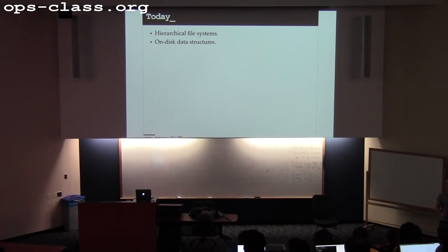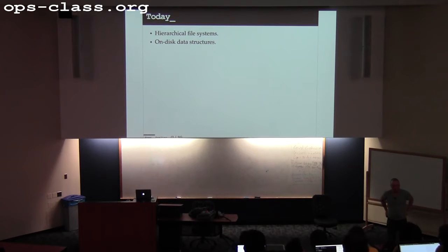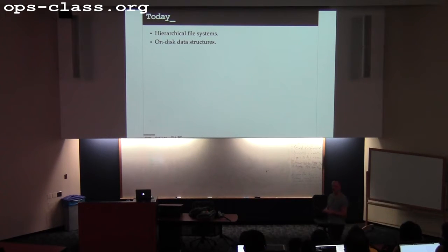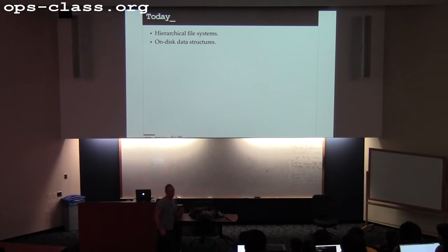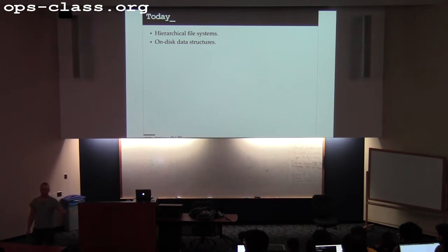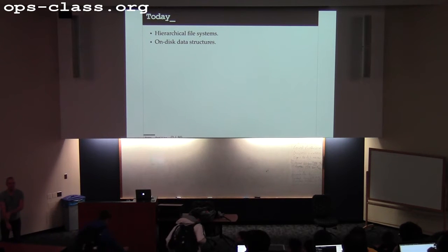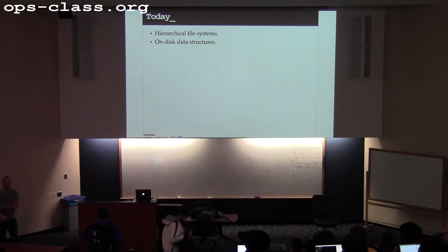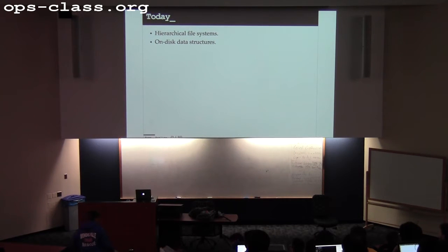We'll finish up talking about our basic expectations about a file. We'll talk a little bit about how files are named and some of the implications and requirements of a hierarchical namespace. And then we'll get into actual on-disk data structures and talk about how file systems actually work. Once we've covered what files are and what you expect from them, we'll have a starting point for a conversation about how file systems actually work.